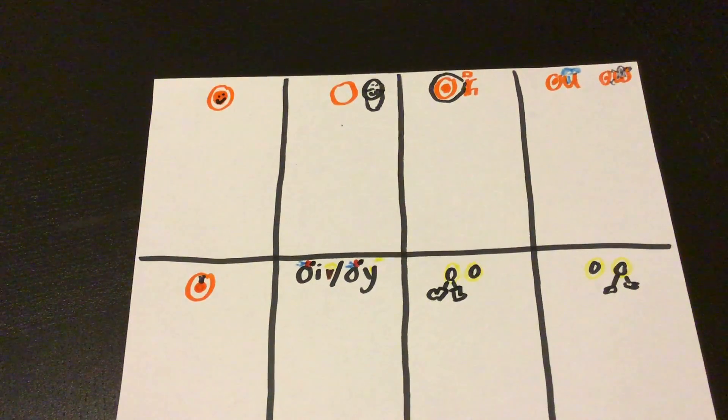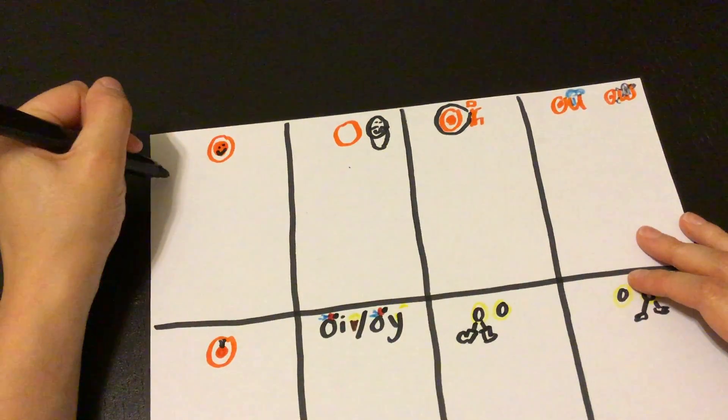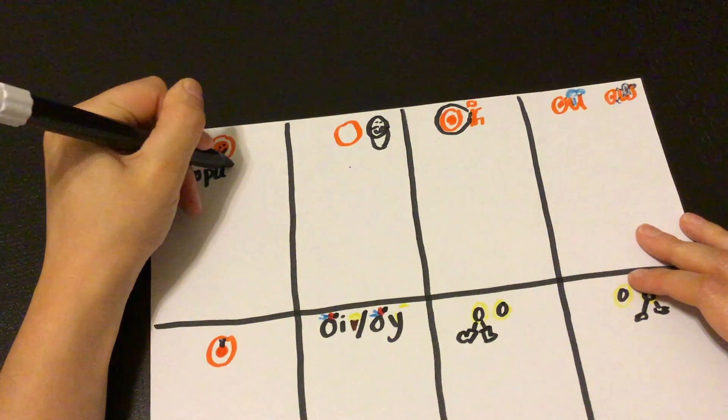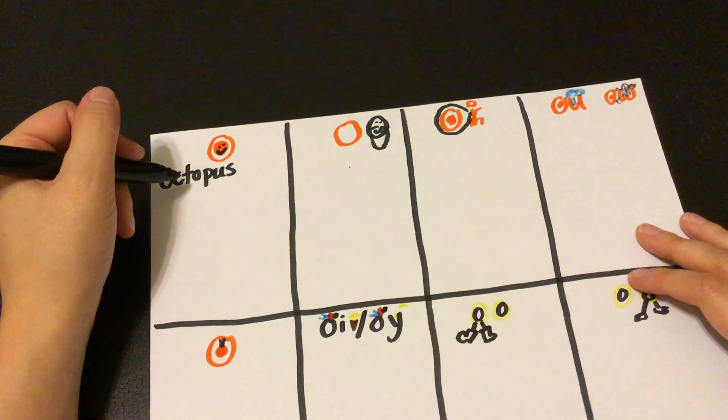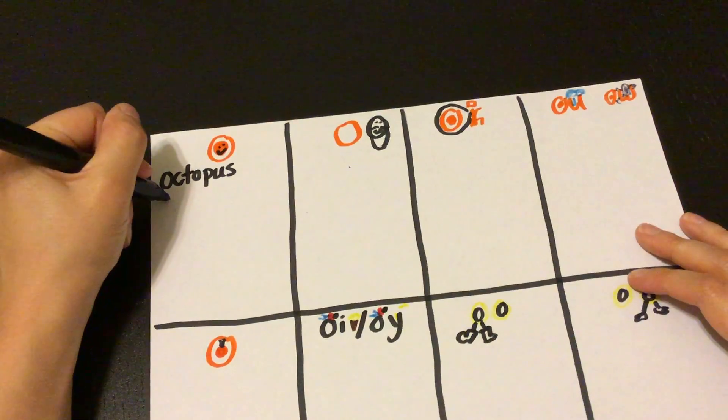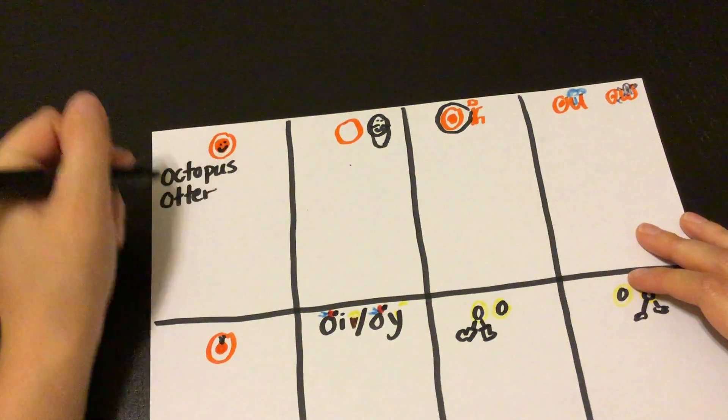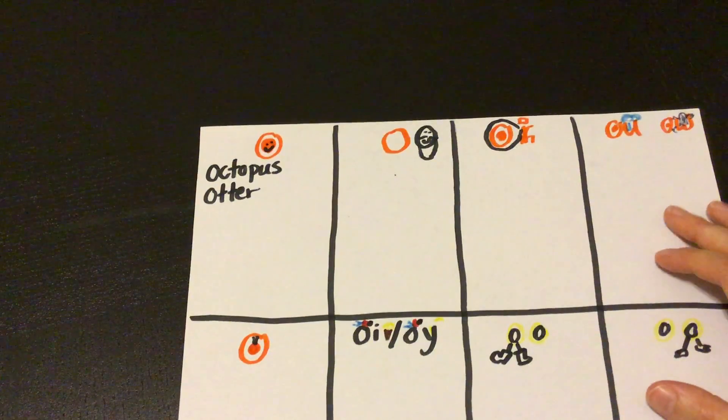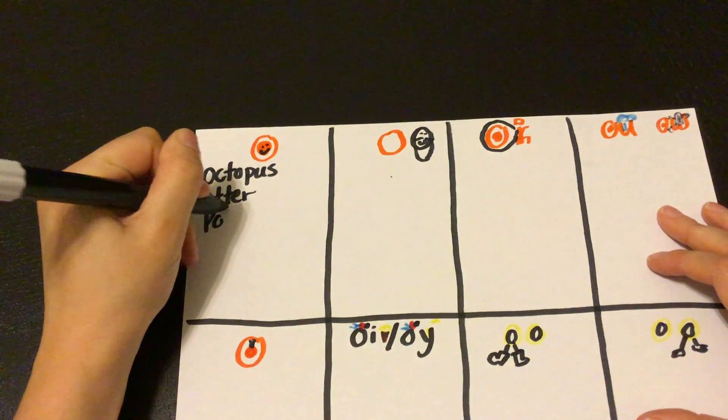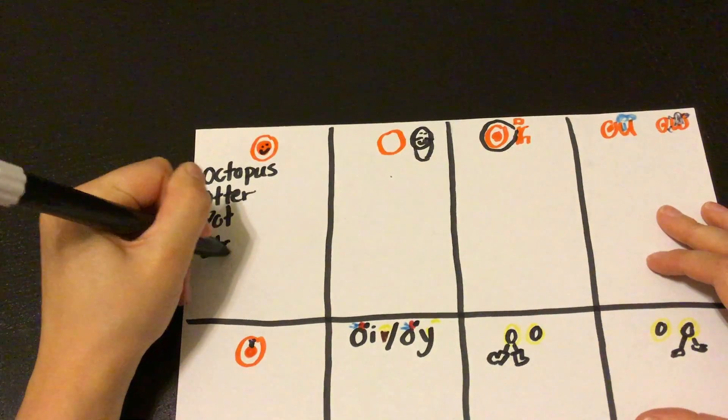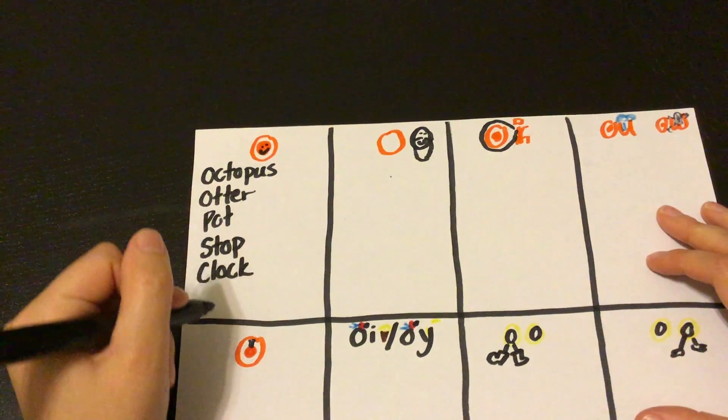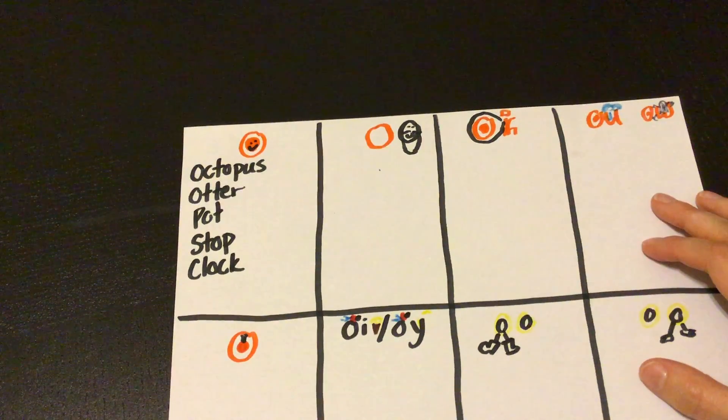Okay, so Oscar Orange, we know Oscar Orange can start lots of words, right? Like octopus, and otter, and ostrich, and olive, and what else? October. We also know that Oscar Orange can come in the middle of lots of words, right? Words like pot, or stop, or clock.